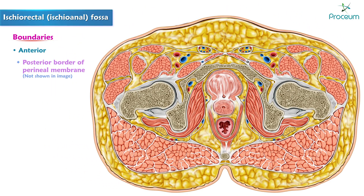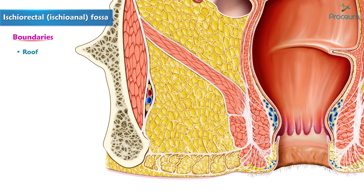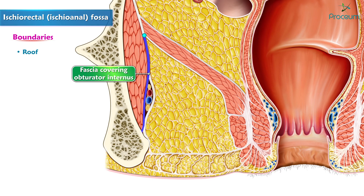Anteriorly, it is bounded by the posterior border of the perineal membrane. The floor is formed by the perineal skin. The roof is formed by the meeting point of the fascia covering obturator internus and the inferior fascia of the pelvic diaphragm.